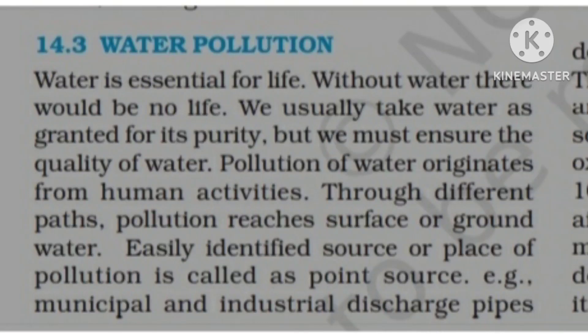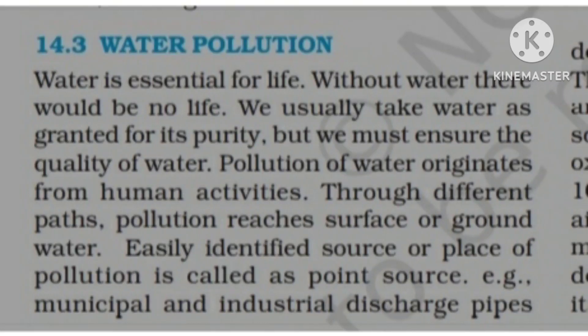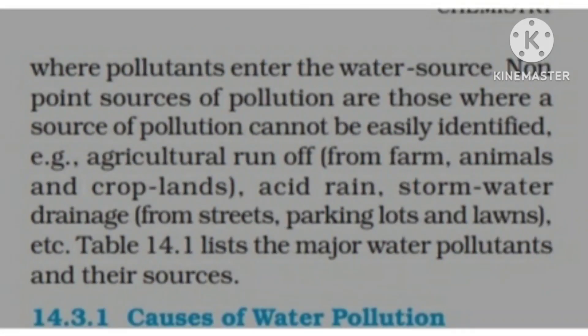Water pollution occurs in industries and water bodies. We can also see water pollution at the household level. Non-point source pollution includes sources we cannot easily identify, like agriculture runoff, acid rain, and soil erosion in agriculture.